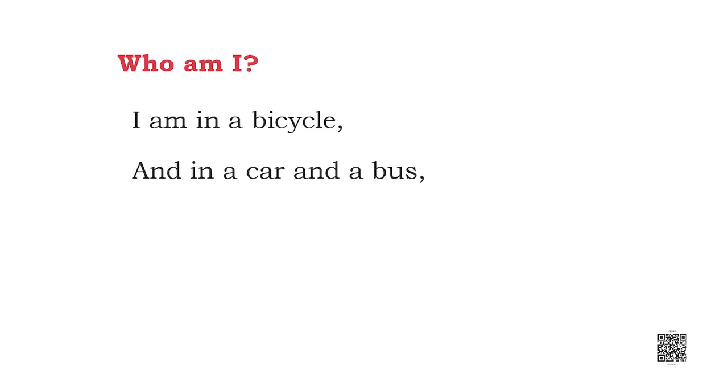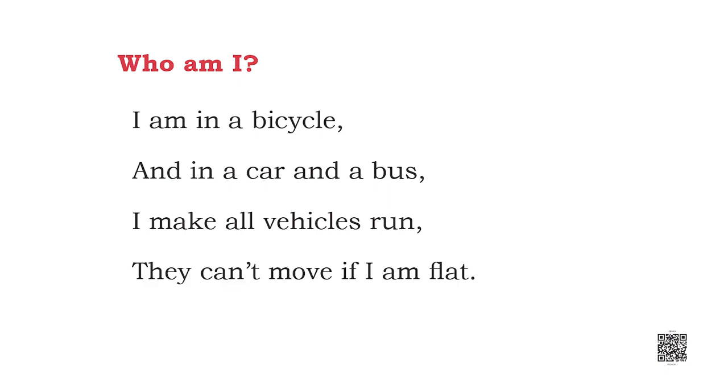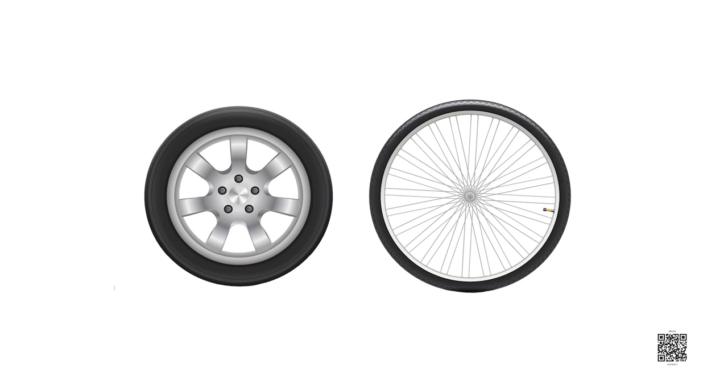Who am I? I'm talking about this puzzle that you have to solve. Listen to the riddle: I am in a bicycle, a car and a bus. I make all vehicles run — they can't move if I am flat. What is my shape? That is a wheel, a round round wheel. If there is no wheel, no vehicle or bicycle or bus can move. Riddle solved!